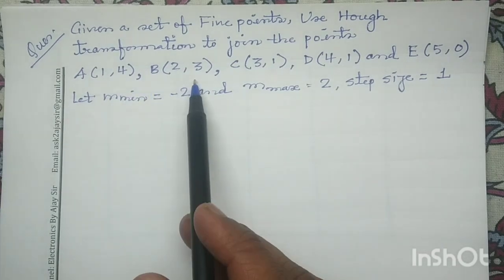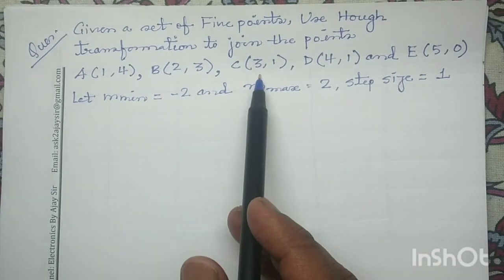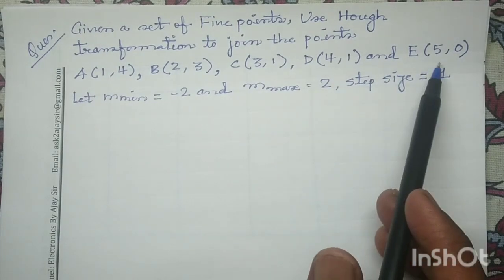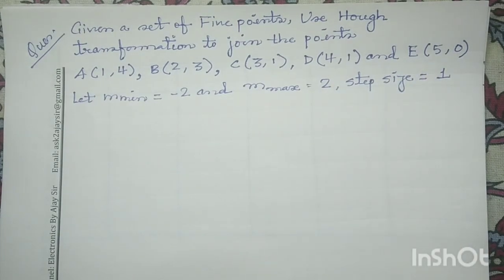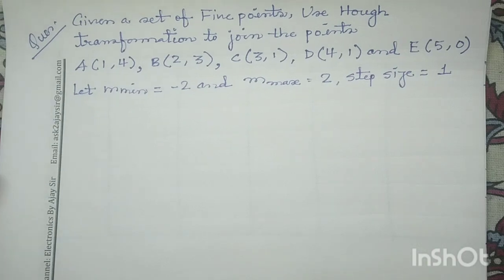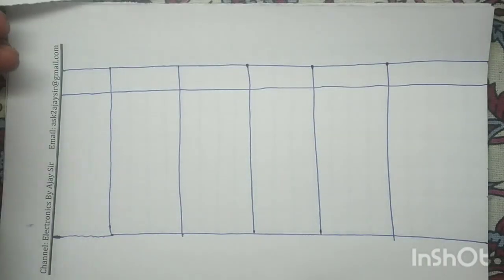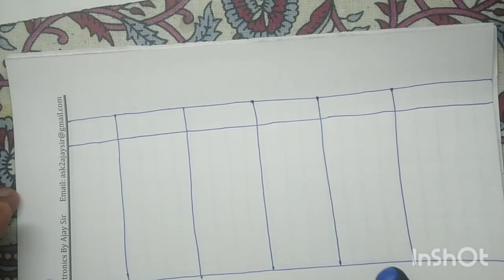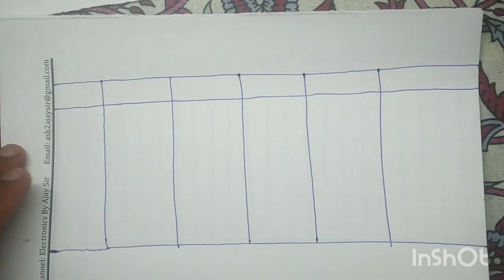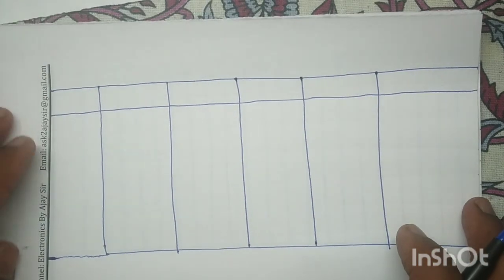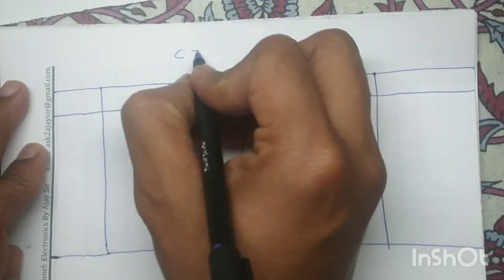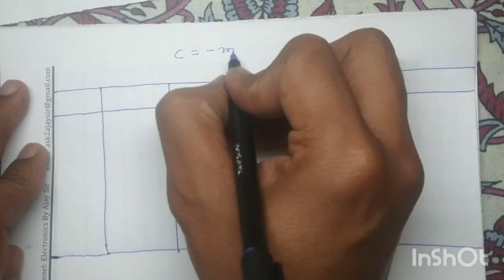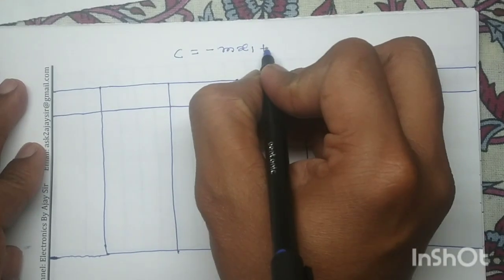The 5 points are: 1,4 — 2,3 — 3,1 — 4,1 — and 5,0. For these 5 points, we have to use Hough transformation to join these points. First, we will write the standard equation of the Hough transformation, that is: c equals to minus m·x₁ plus y₁.